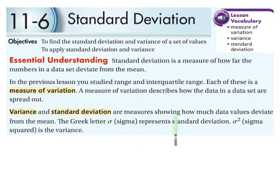Variance and standard deviation are measures showing how much data values deviate from the mean. We use the Greek letter sigma for standard deviation and sigma squared is the variance. So literally we just square the standard deviation to get the variance.